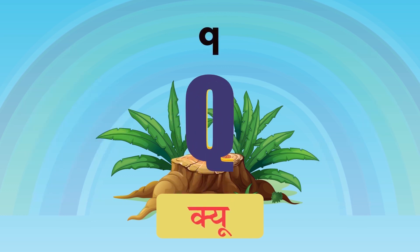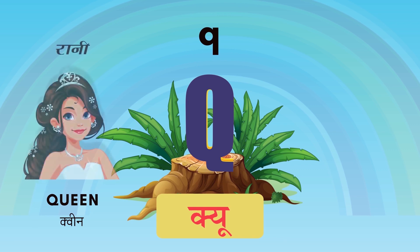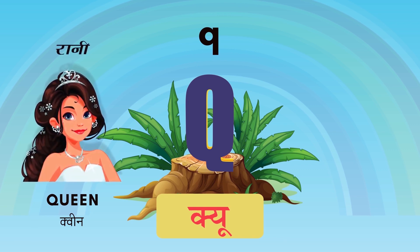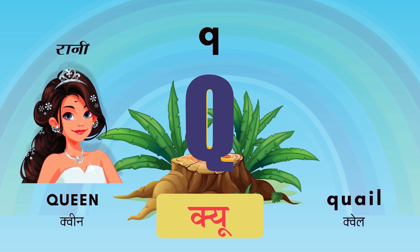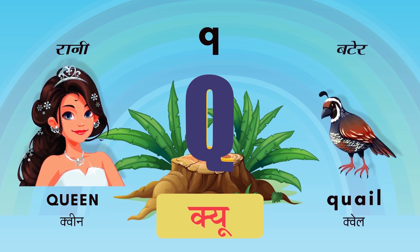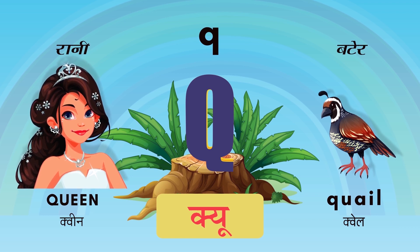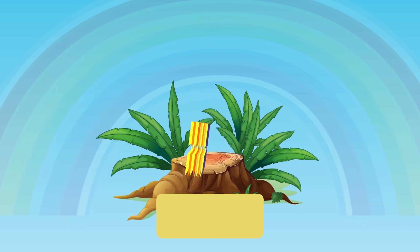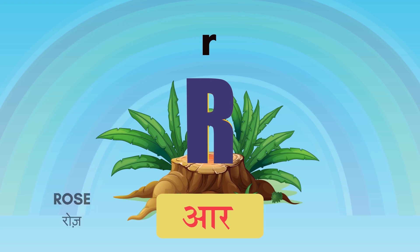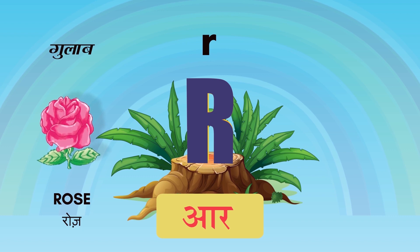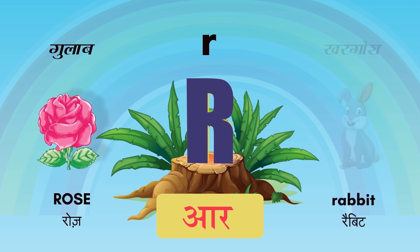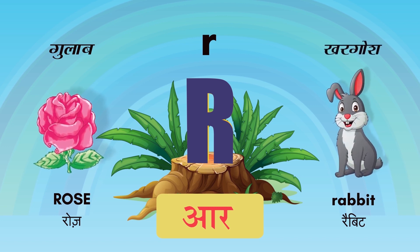Q for Queen, Yaani Rani. Q for Quail, Yaani Bater — ye ek pakshi hota hai. R for Rose, Yaani Gulab. R for Rabbit, Yaani Khargosh.